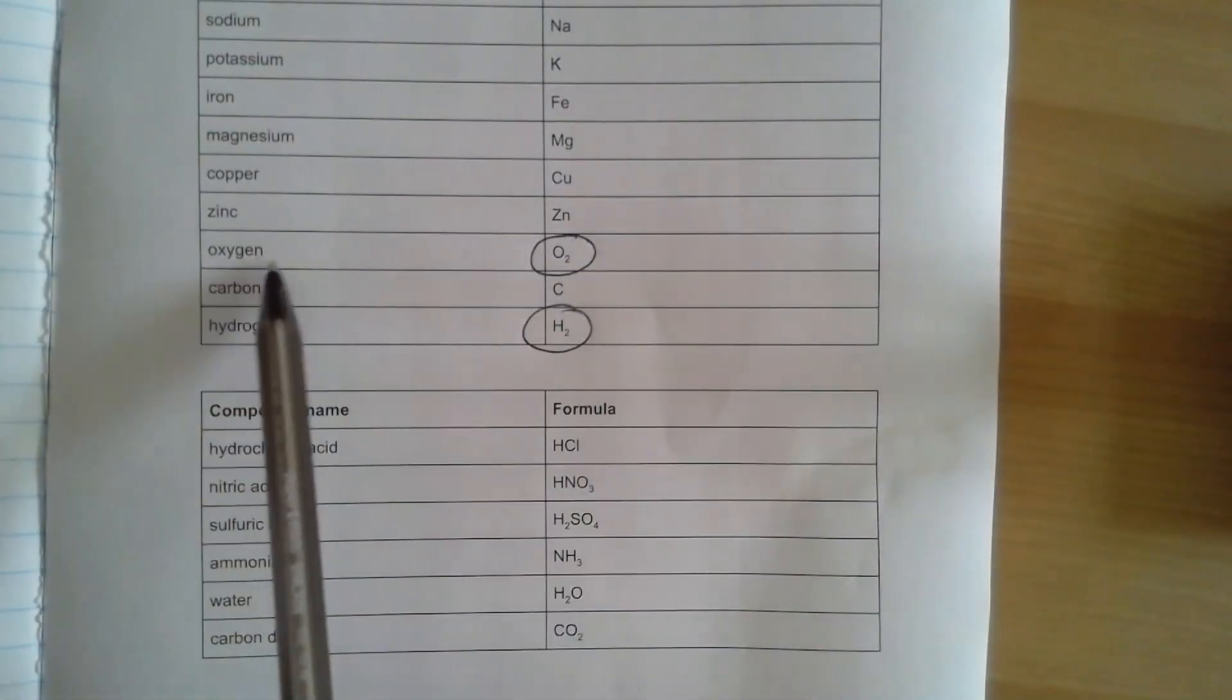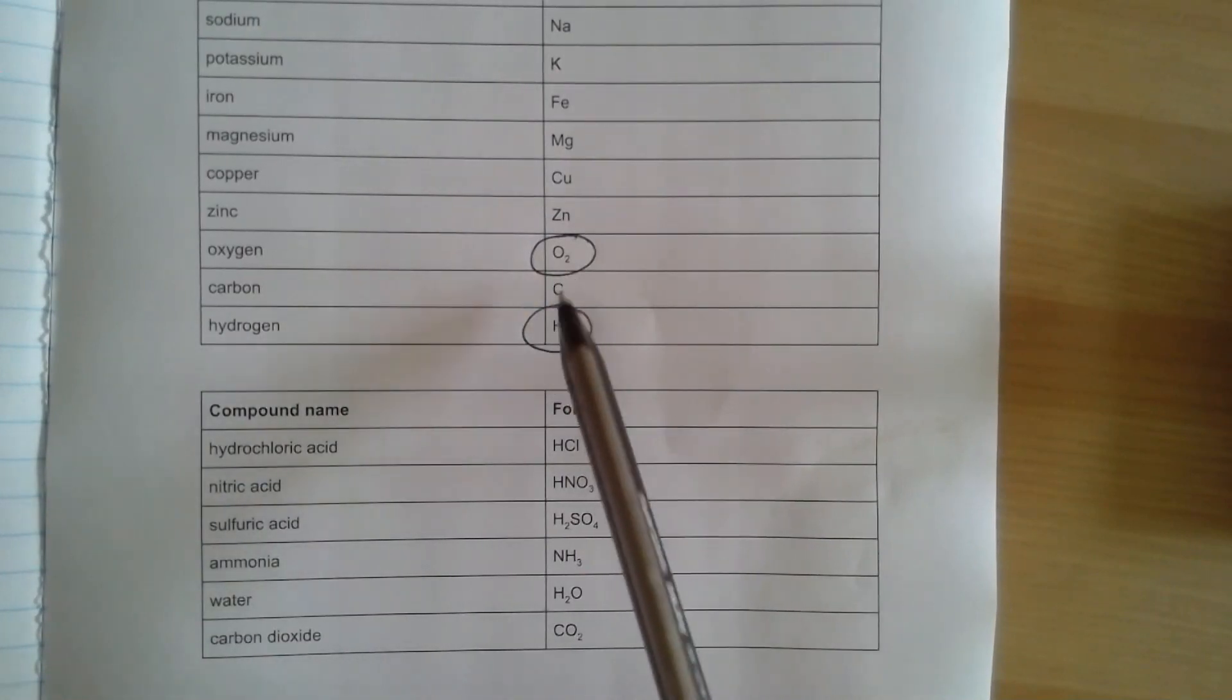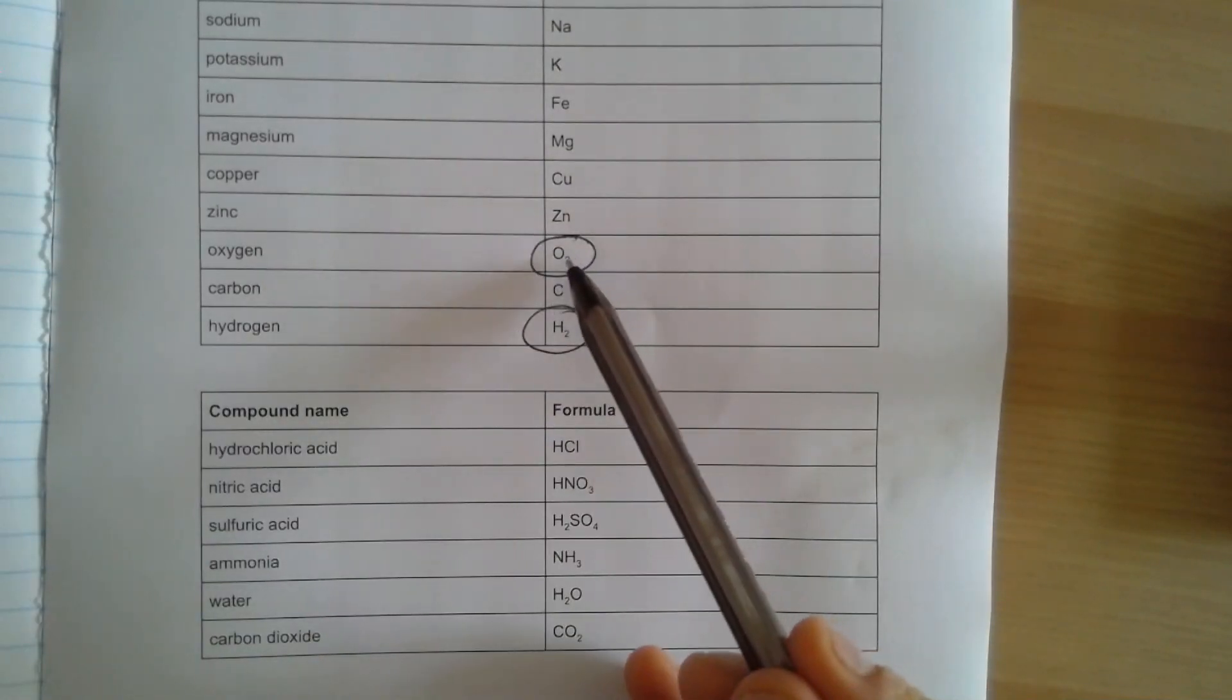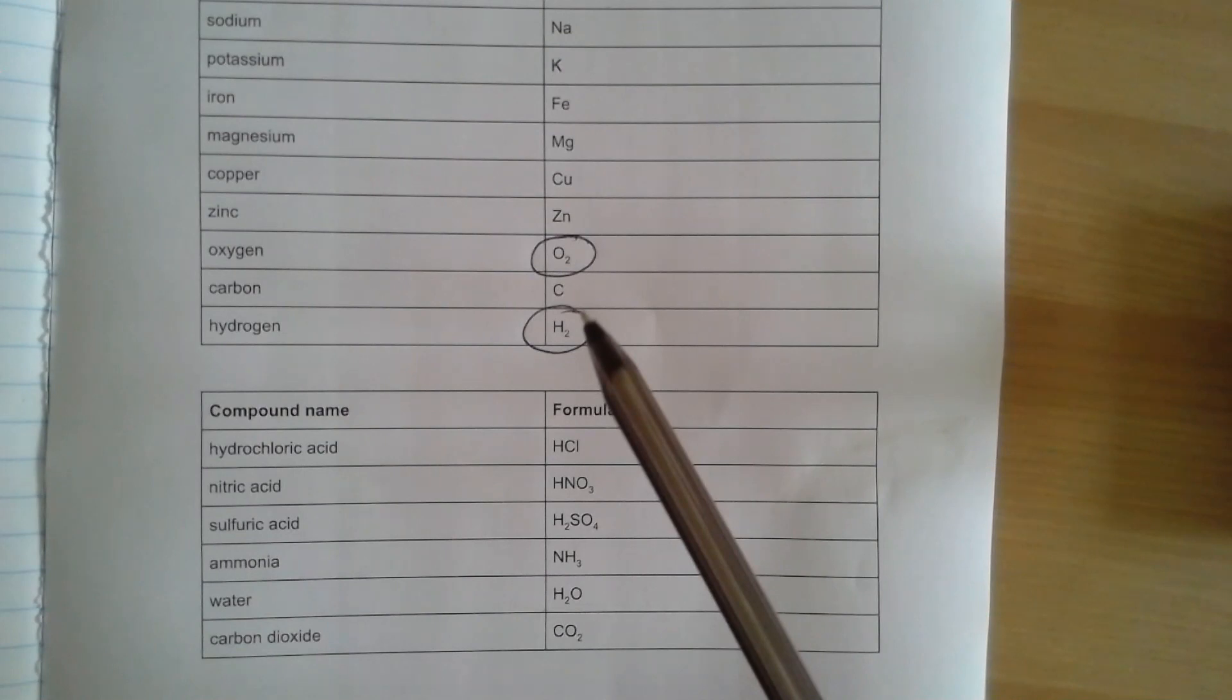I've circled oxygen and hydrogen here because they've got a little two after them. We'll talk in future lessons about exactly why that is. But it's important for us to know that oxygen exists as two oxygen atoms bonded together. That's why it's O2 and hydrogen as two hydrogen atoms bonded together. That's why it's H2.